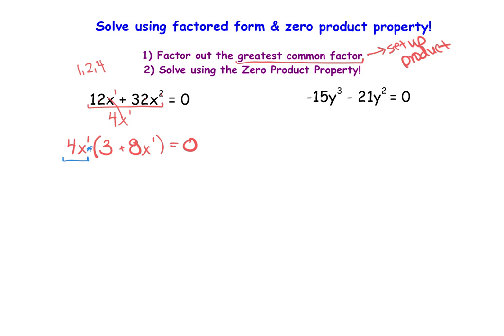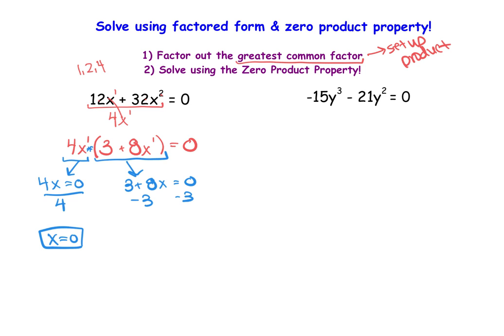We now have 4x times (3 + 8x) equal to zero. Setting each part equal to zero: dividing 4x = 0 by 4 gives x = 0 as one option. For 3 + 8x = 0, we subtract 3 to get 8x = −3, then divide by 8, giving x = −3/8. Those are our two options for x.